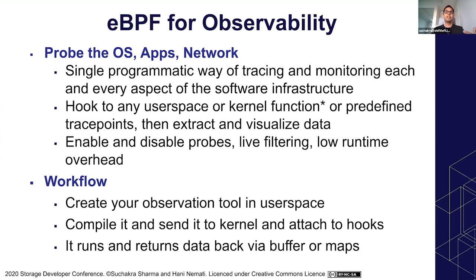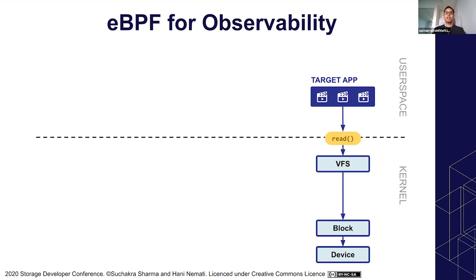You can write programs that tell the kernel to only record trace snapshots when certain conditions are met. The workflow is to create your observation tool in user space — using Python, C, or the BPFtrace DSL. It gets compiled down to BPF bytecode, sent to the kernel, and attached to certain hooks inside the kernel. Most kernel functions can be hooked. Once attached, it executes, and whenever a condition is met and that kernel function is hit, it starts returning data back to buffers. Here's a simple example: a target app is doing multiple reads, like a video encoding app fetching data from a device.